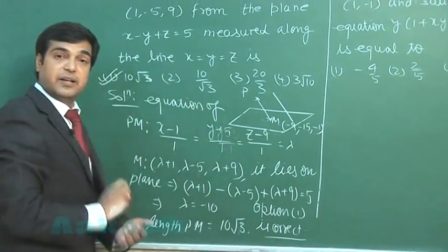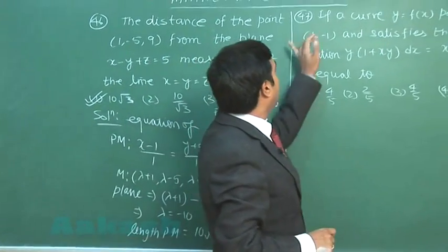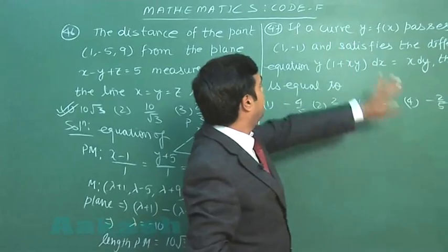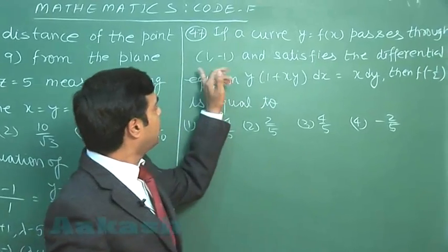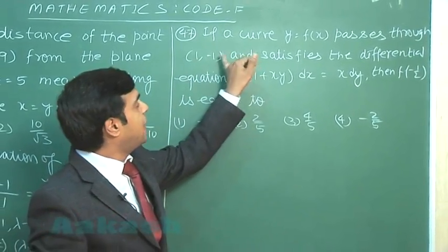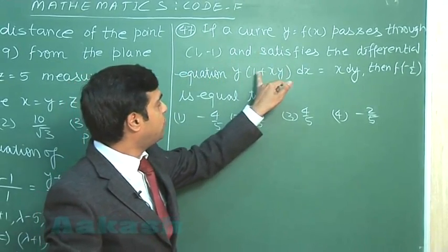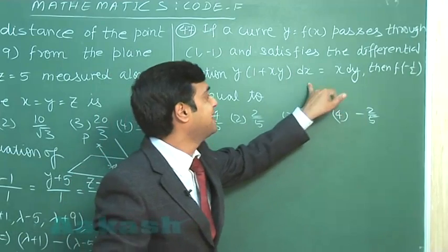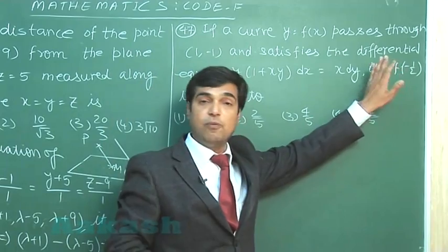So this is clear, another simple one from three-dimensional geometry. Now, turn for 47th question. If a curve y = f(x) passes through (1, -1) and satisfies the differential equation y(1 + xy) dx = x dy, then find the value of f(-1/2).